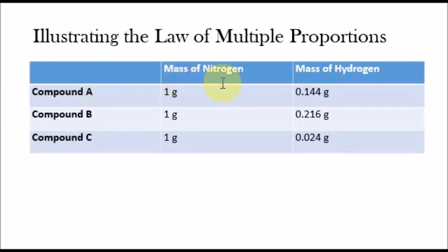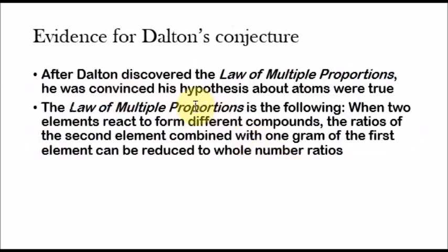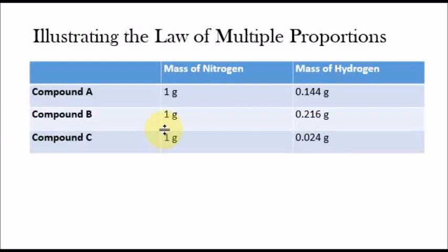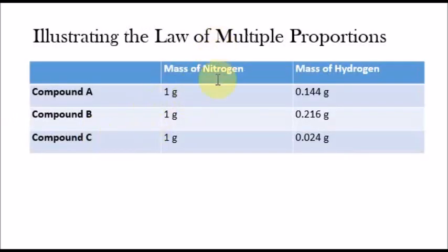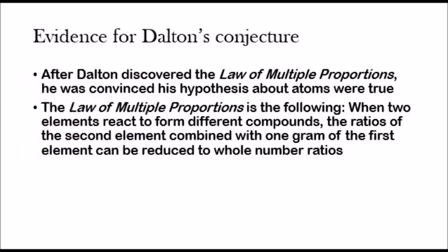Here we have two elements reacting: nitrogen and hydrogen. We have one gram of the first element, nitrogen. For compound A, one gram of nitrogen combines with 0.144 grams of hydrogen. For compound B, one gram of nitrogen combines with 0.216 grams of hydrogen. And for compound C, one gram of nitrogen combines with 0.024 grams of hydrogen.